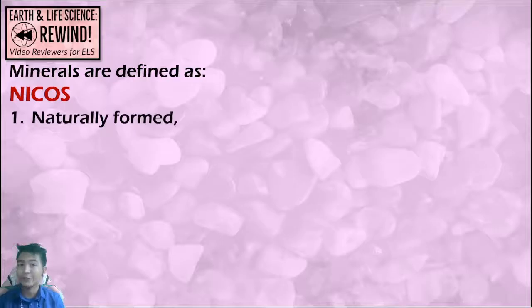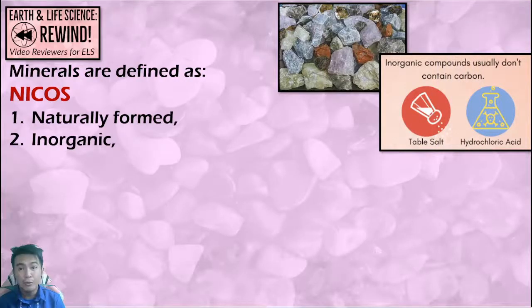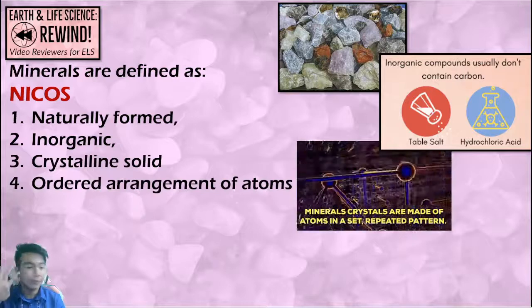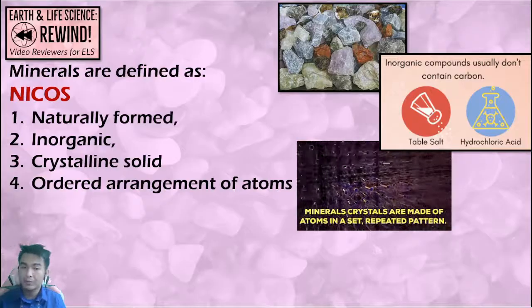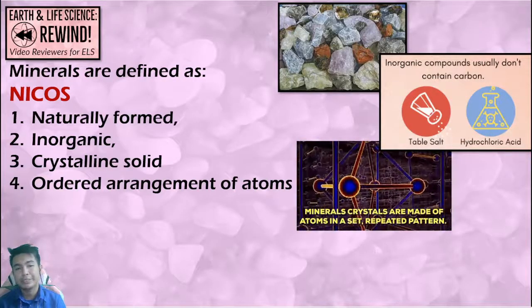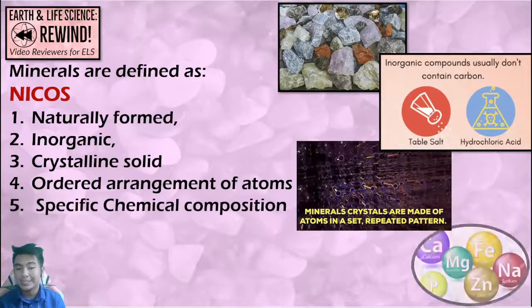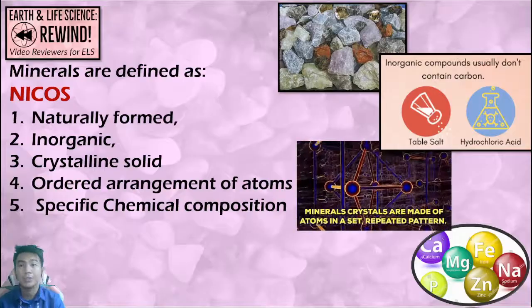First, minerals are naturally occurring on this planet. Next, they are inorganic — not related to living organisms. Number three, crystalline solid. And number four, an ordered arrangement of atoms. C and O are related because the crystalline shape and appearance of minerals is related to the ordered arrangement of their atoms. Last, minerals have a specific chemical composition, and minerals are also categorized by these chemical compositions.